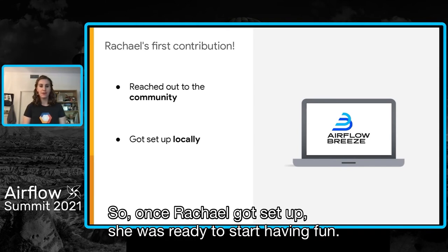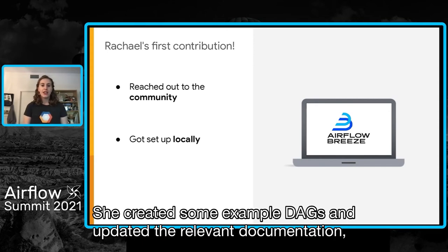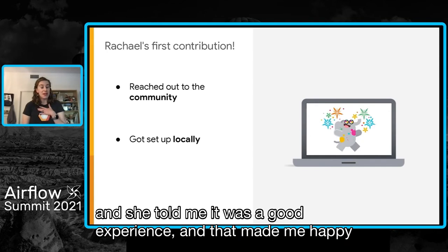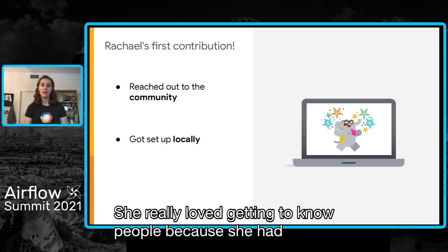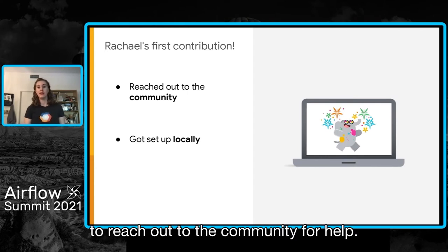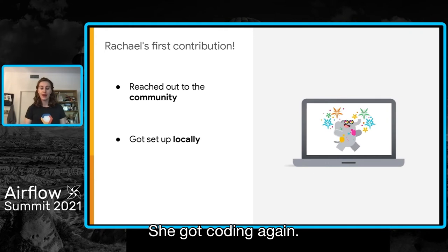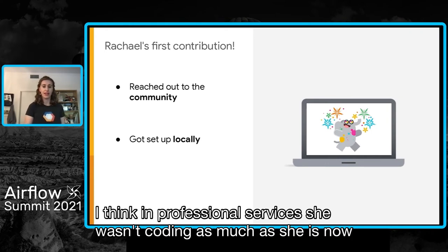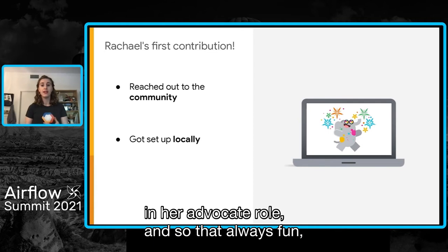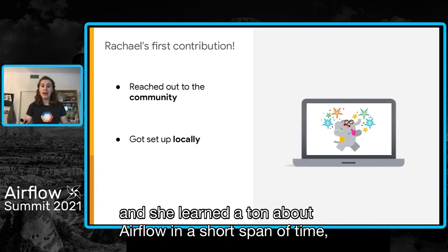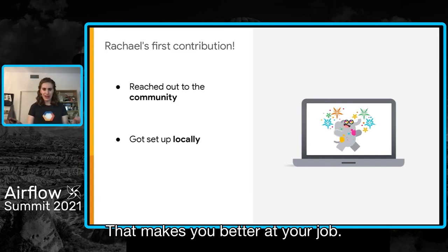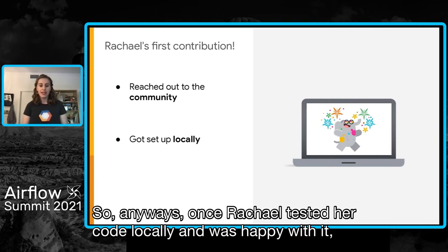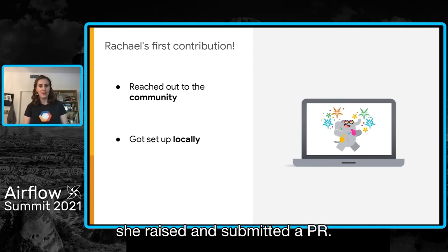Once Rachel got set up, she was ready to start having fun. She created some example DAGs and updated the relevant documentation. She told me it was a good experience, and her reasons were really similar to my own. She loved getting to know people through reaching out to the community for help. She got coding again — in professional services she wasn't coding as much as she is now in her advocate role. And she learned a ton about Airflow in a short span of time, which always makes you better at your job. Once Rachel tested her code locally and was happy with it, she raised and submitted a PR.